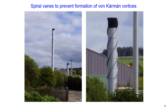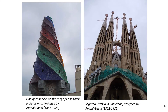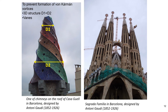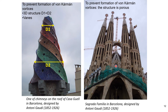Spiral vanes are also commonly seen on chimneys to prevent formation of von Kármán vortices and ensure there is no structural damage. Other methods to prevent formation of von Kármán vortices include designing a 3D structure — for example, where diameter D1 is smaller compared to diameter D2 — in addition to vanes. Another approach is to design a structure that is porous.